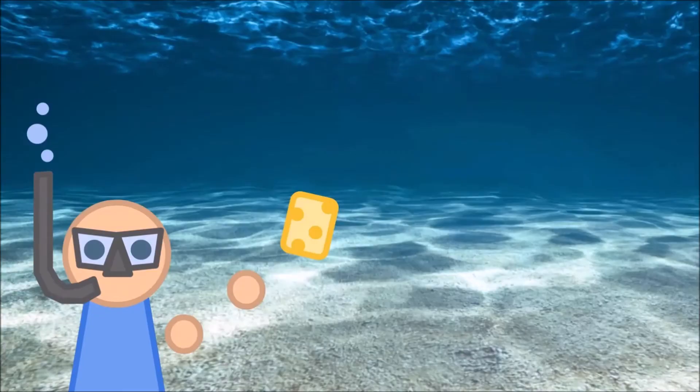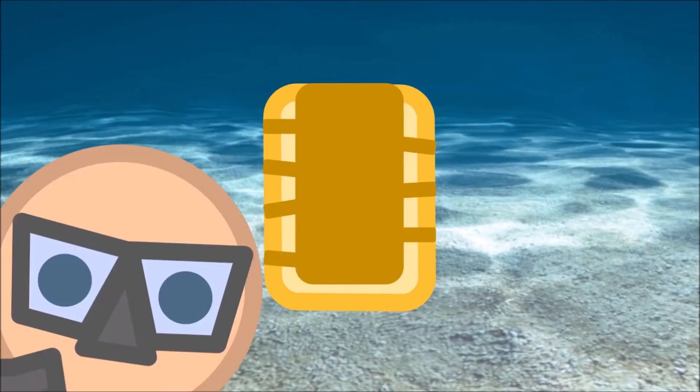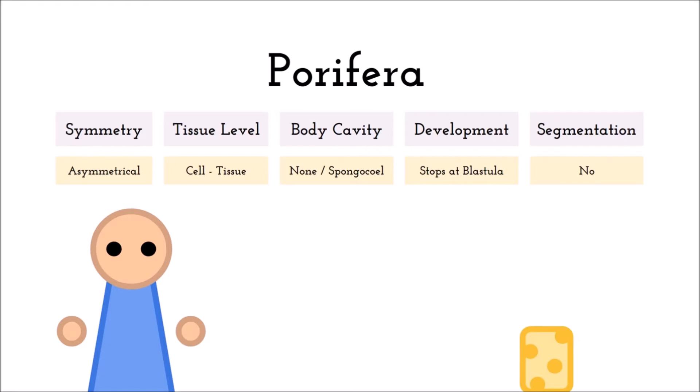When it comes to a body cavity, porifera don't really have one, although some asconoid and syconoid sponges do have a spongocoel. What a body cavity actually is, we'll get into more detail when we get to someone who has one. It's connected to their embryonic development, and because sponges don't go further than the blastula, a hollow ball of cells, they don't have a body cavity. Sponges are also not segmented.